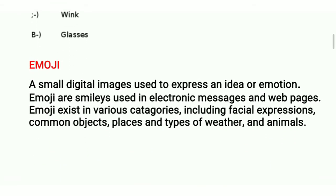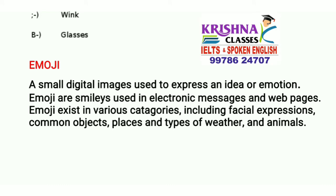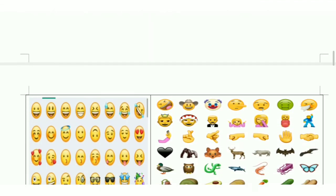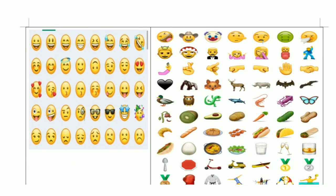Now let's understand emoji. Many of the youngsters are aware about emojis. A small digital image used to express an idea or emotion. Emojis are smileys used in electronic messages and web pages. Emojis exist in various categories including facial expressions, common objects, places, types of weather, and animals. We are very much familiar with the keypad — in that we can find this option. These are sample emojis you can find in any mobile, specifically smartphones and Android phones.